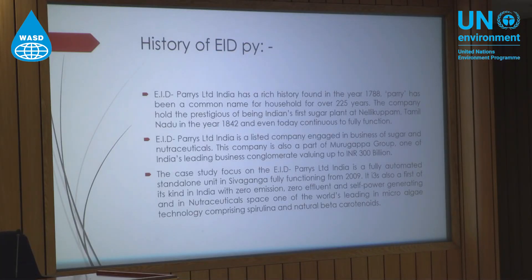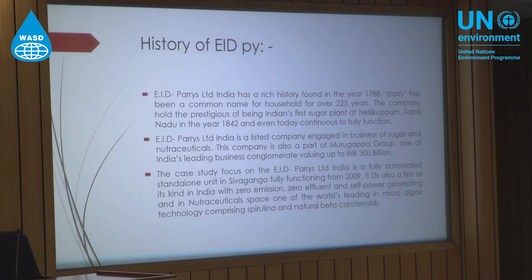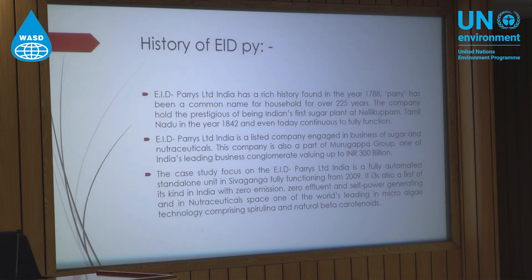Moving on — the history of EID Parry has a rich historical foundation. Founded in the year 1788, Parry is a very commonly known household-level sugar brand. It's been like this for almost 225 years. The first plant was started in 1788 in a place called Nellikuppam, Tamil Nadu, India, and it is still fully functioning today.